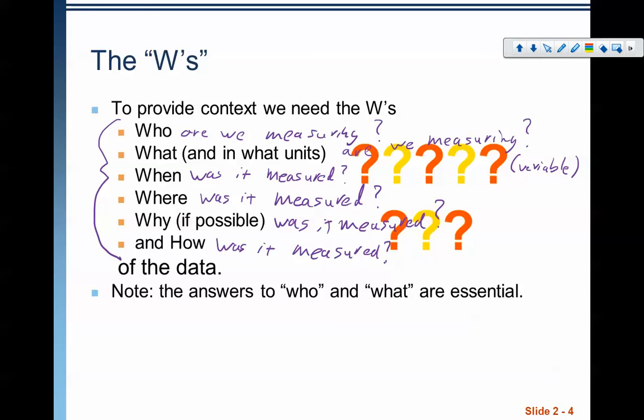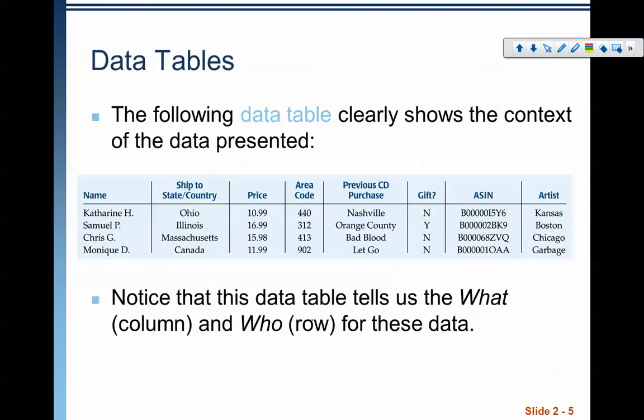Major note here: the who and the what are probably the most essential. Everything else is giving us information about the data, but the who and the what tell us very specifics of what it is we need.